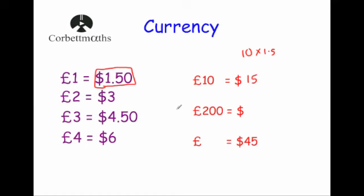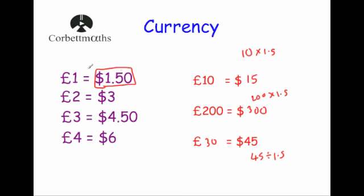Likewise, if I wanted to change 200 pounds into dollars, I'm going to times by 1.5 — so 200 times 1.5 gives me 300 dollars. If we wanted to go backwards from dollars into pounds, you would just divide by 1.5. So 45 divided by 1.5 equals 30 pounds. To convert into dollars, multiply by 1.5; to convert back into pounds, divide by 1.5.